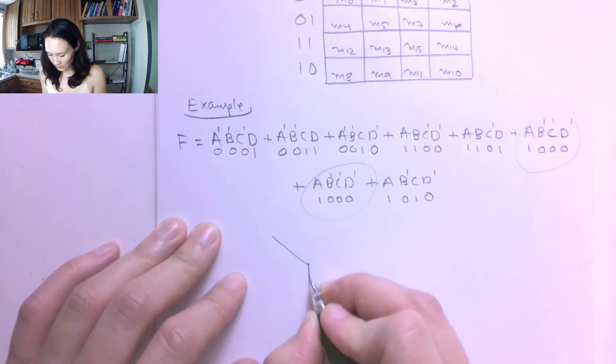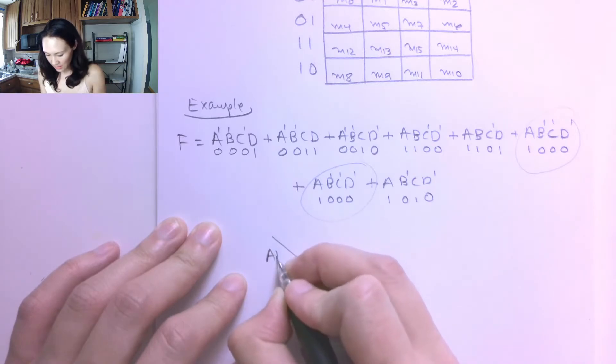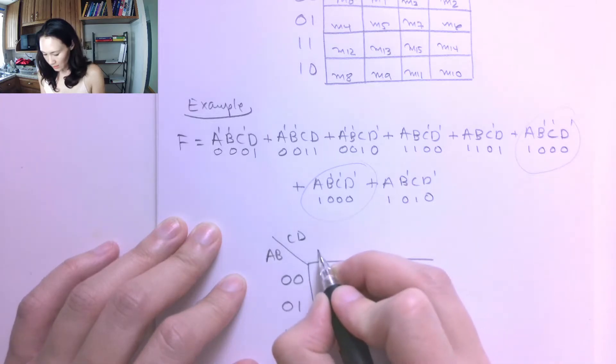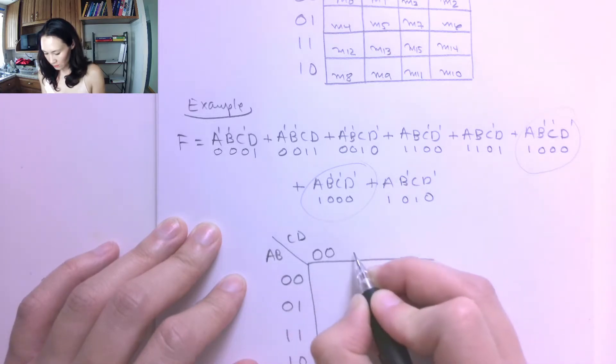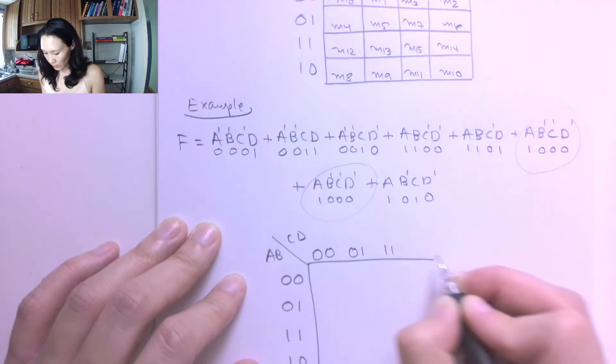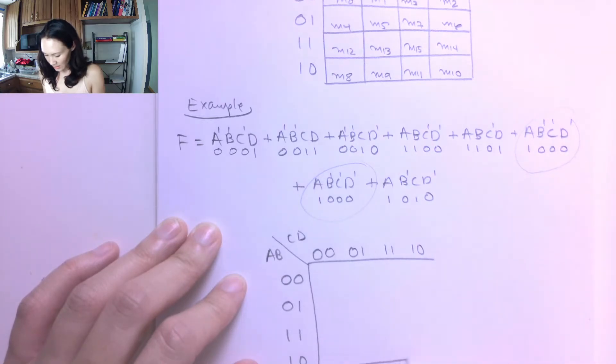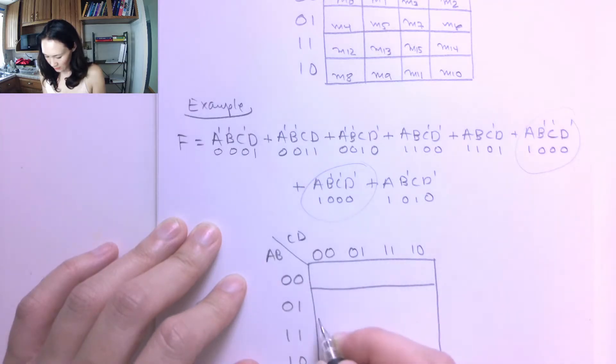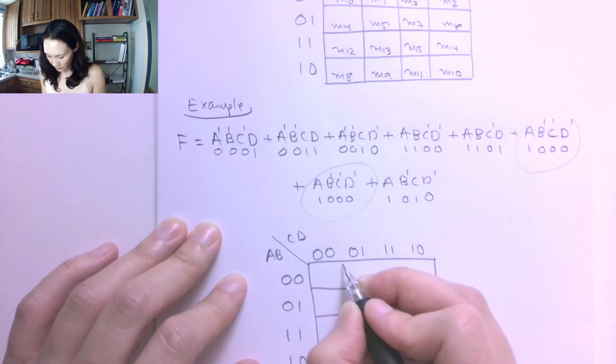So I'm going to construct my K-map with A and B on the left side and C and D above. And my input combinations for A and B are 0, 0, 0, 1, 1, 1, 1, 0. That needs to be in gray code. Same story up here, 0, 0, 0, 1, 1, 1, 1, 0. And now I can start filling in my table based on all of those 0s and 1s that I wrote from the literals.